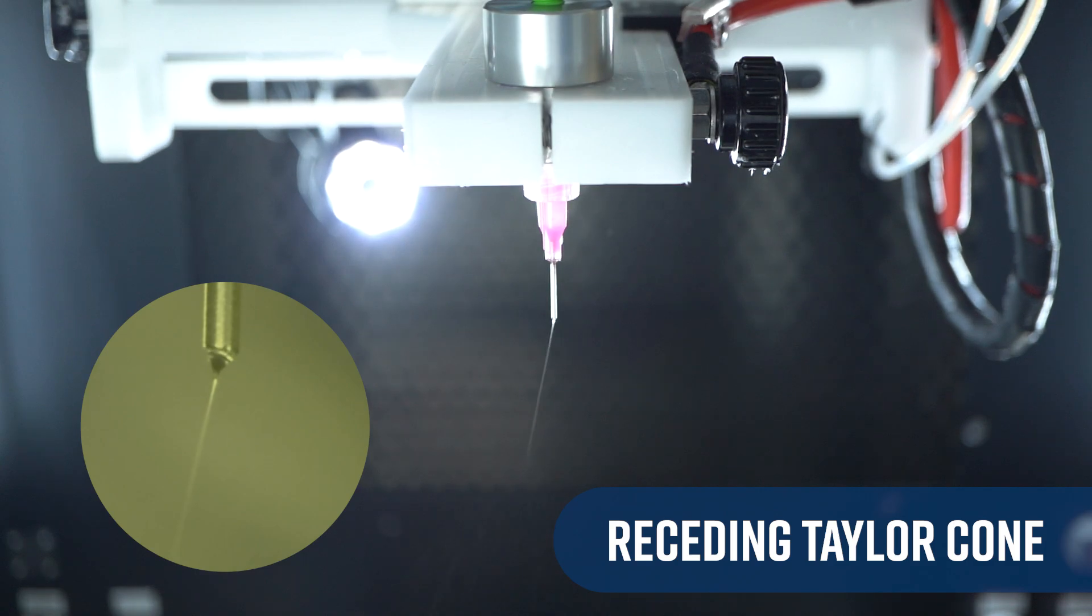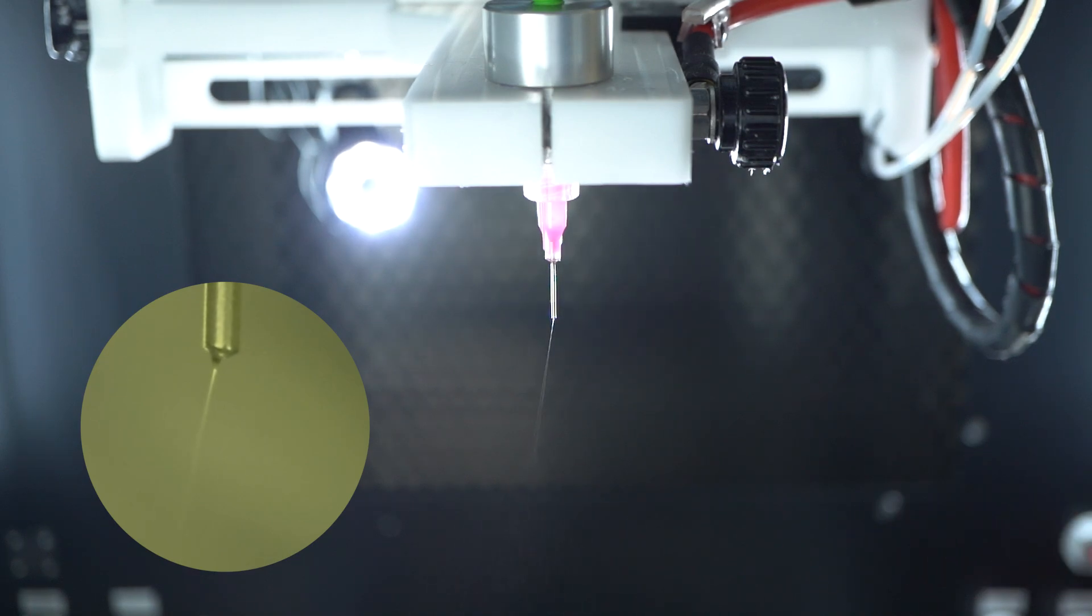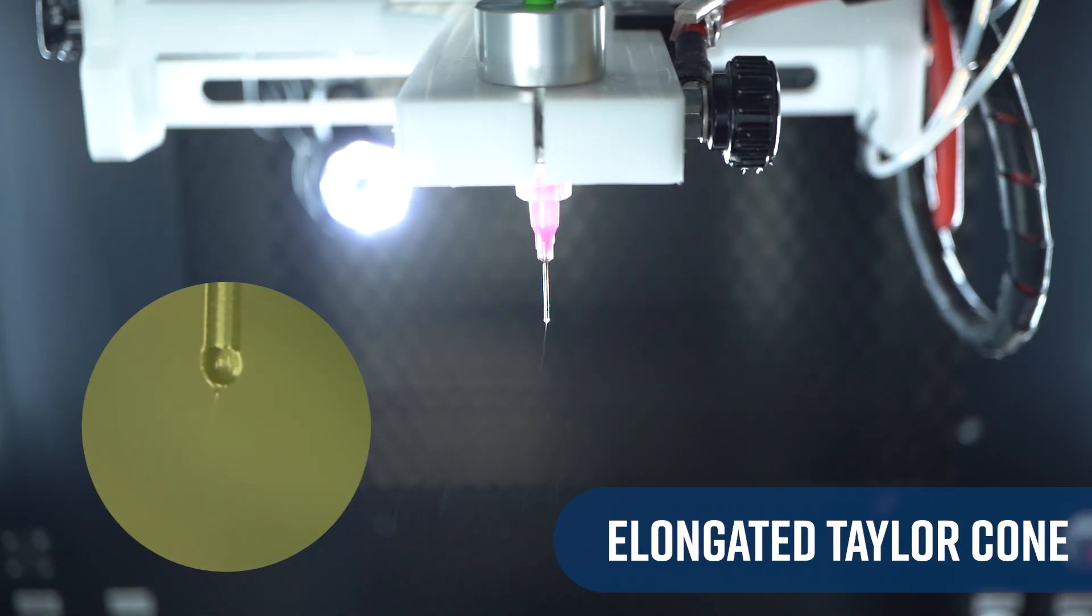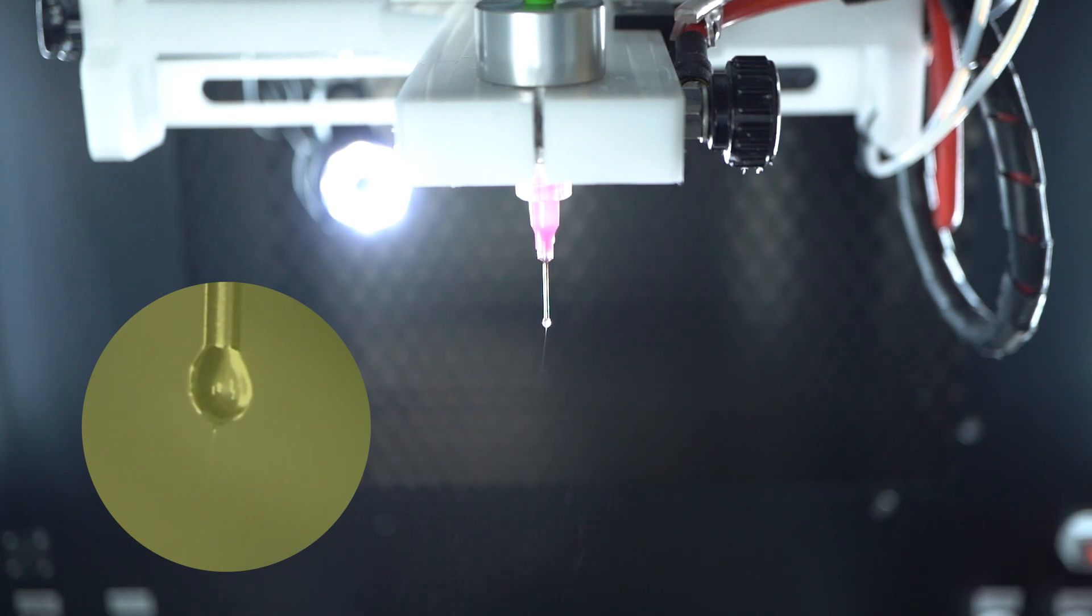In another case, if we have an elongated Taylor cone or dripping, we may see defects in our sample like drips, holes, and variation in fiber diameter sizes. In both of these cases, we should consider adjusting parameters like flow rate, voltage applied, and working distance, assuming our solution is optimized.